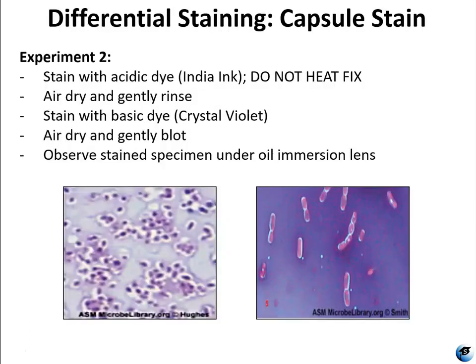Capsules are composed of mucoid polysaccharides or polypeptides that repel most stains. The capsule staining technique takes advantage of this characteristic by staining around the capsules. You combine positive and negative staining techniques to visualize the capsules that don't stain. The positive stain colors the body of the cell, and the negative stain colors the background, leaving a little white halo around your cells — that is the capsule.